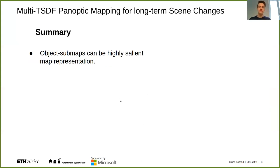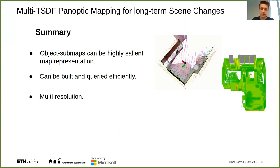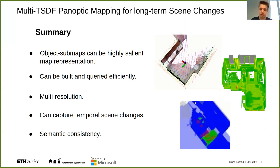To summarize: we have explored an object-centric sub-map-based approach and showed it can be a highly salient representation for volumetric maps. It can be built and queried very efficiently on a laptop CPU given good semantic predictions. It is inherently multi-resolution, which is useful for more accurate and memory-efficient reconstruction. Most importantly, we can disentangle where measurement disagreements come from, in order to process each measurement correctly and keep an up-to-date map that uses as much previous information as possible. And by construction, we have semantic consistency — you will never see half a table floating in your map, as the entire table would be removed.